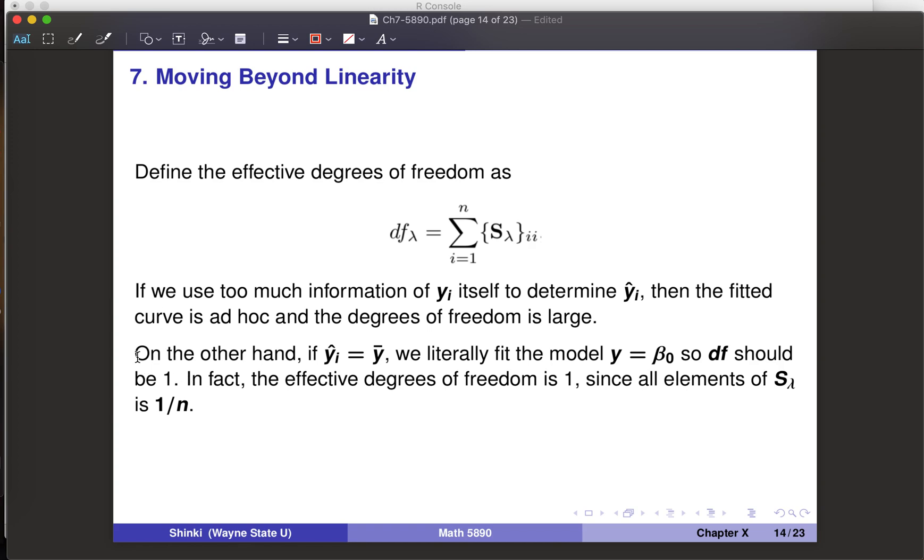On the other hand, suppose we define yi hat equals y bar, the average of all observations. Then basically this is the same as we fit the model y equals beta naught, regardless of xi. We estimate y as a constant. In this case, the df should be 1 in the usual sense. But actually, this effective degrees of freedom is also 1. Because if yi hat equals y bar, then the coefficient of yi on the right-hand side is 1 over n. All diagonal terms are 1 over n. If we add n terms, df equals 1.